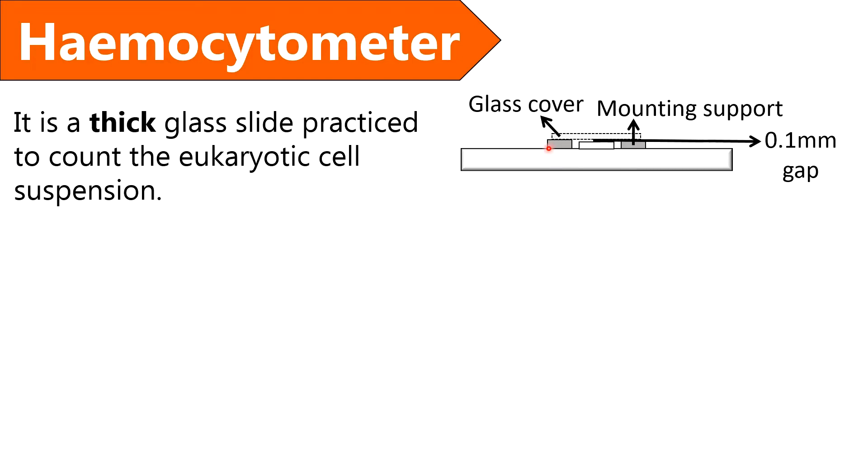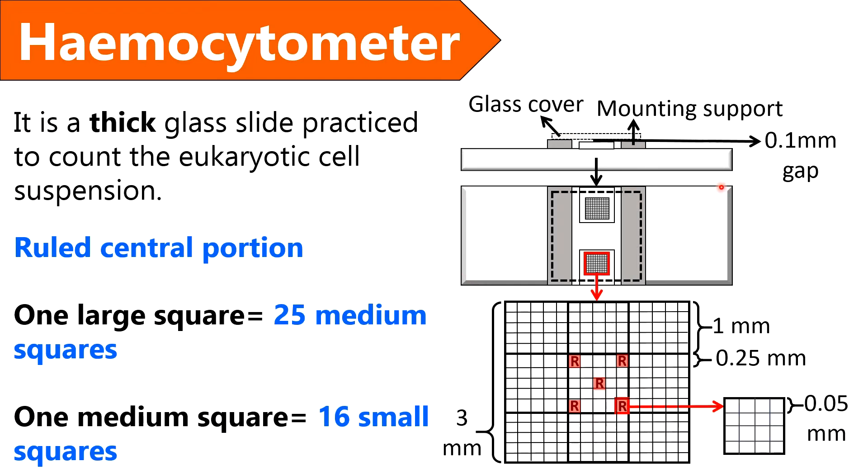Here you can see the elevated portions in the hemocytometer slide that provides a mounting support to the glass cover or coverslip. This is the front view of hemocytometer that has the ruled central portion where the diluted blood sample is loaded, and there is a 0.1 mm gap between the counting grid and glass cover.